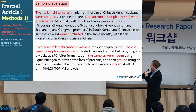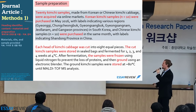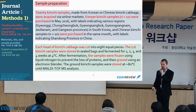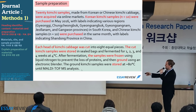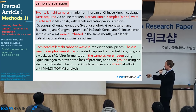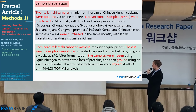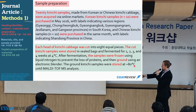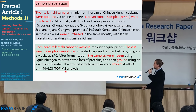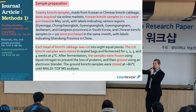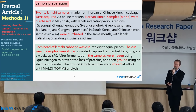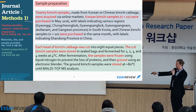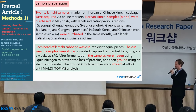Next you explain the preparation — how you prepared the materials. You'll have a lot of action verbs here: 'Each head of kimchi cabbage was cut.' 'The cut kimchi samples were stored in sealed bags.' 'The samples were frozen using liquid nitrogen and then ground using an electronic blender.' Again, you have passive voice and a variety of different verbs — this helps your article not be boring and repetitive if you use the same verbs again and again.